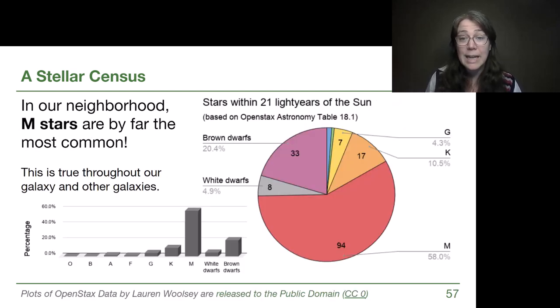In our neighborhood, M stars are by far the most common and I want us to stop and recognize something important here. Those are the ones that are most likely to be missed in our census counts because they are dim and small and hard to find. So the fact that over 50% of all of the stars in the volume around us are M stars tells us that they are definitely the most common type of star that exists, the most common type of star that gets made. The second most common type of star is a K-type star, so slightly brighter and bigger than M stars.